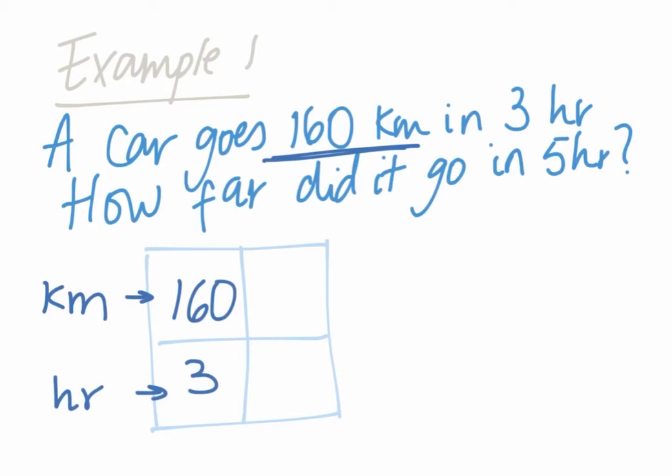The second information in the question says how far did it go? So how far means kilometers. That's going to be your X, the unknown. So I'm going to put it here. That's the unknown. And how far did it go in five hours? So that goes right below it.